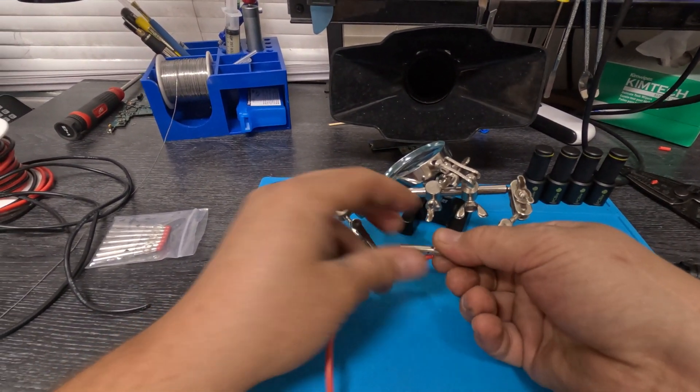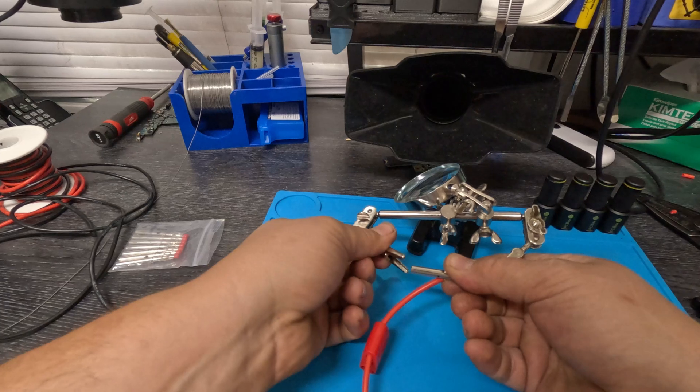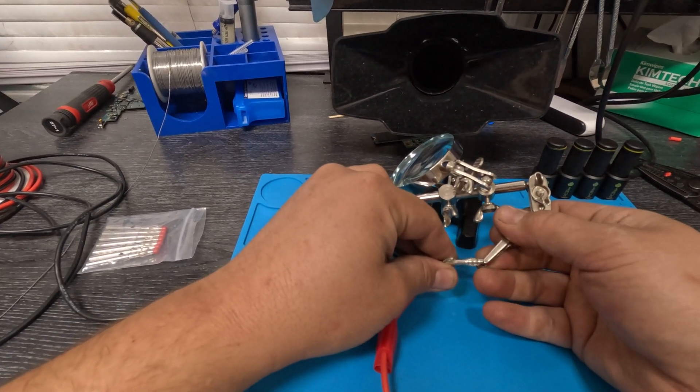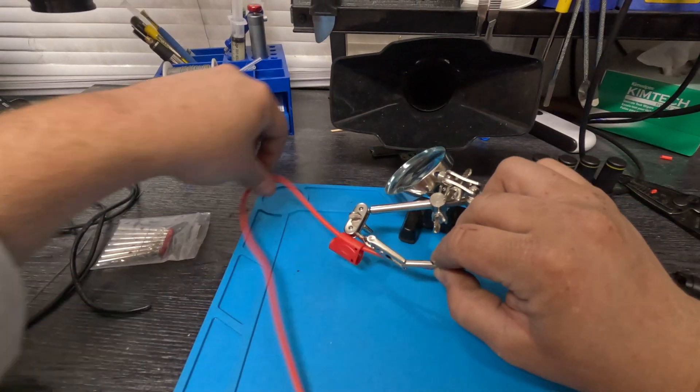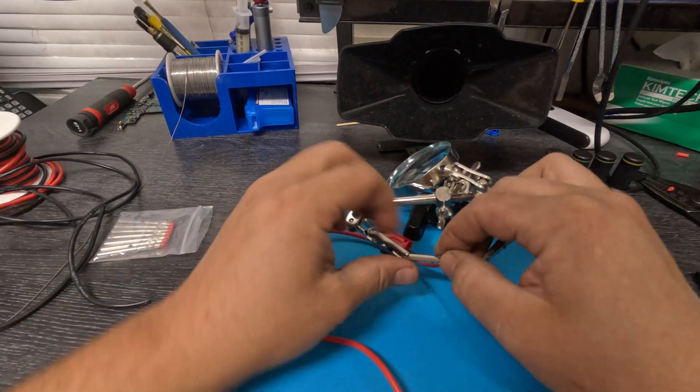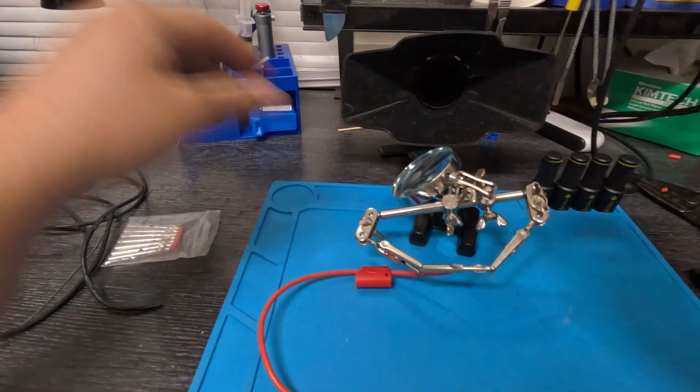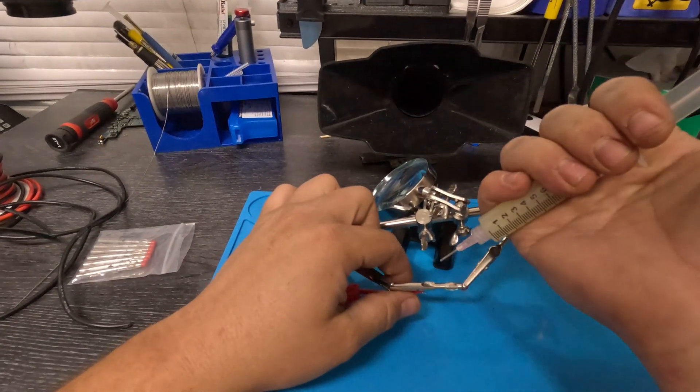Now I don't know if there's a better way to do this, but this has always worked for me. Put it on the flat side. Now the trick is use flux when you're soldering. Flux is your friend, so I'm going to put some flux on here.